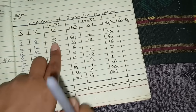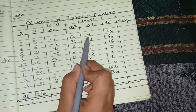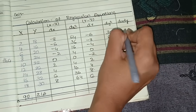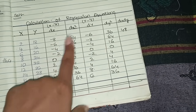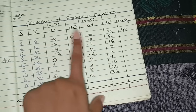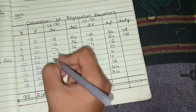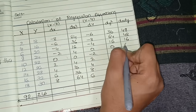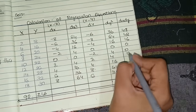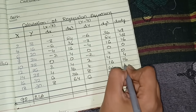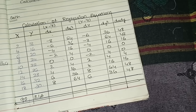Now calculate dx·dy — multiply each dx value by its corresponding dy value. Remember: minus×minus=plus. So: (−8)×(−6)=+48, (−6)×(−8)=+48, (−4)×(−4) wait — (−4)×(−4)=+16, (−2)×0=0, 0×(−2)=0, 2×2=4, 4×4=16, 6×8=48, 8×6=48.